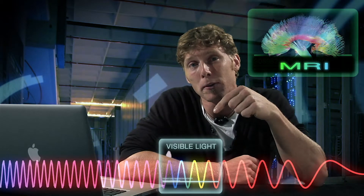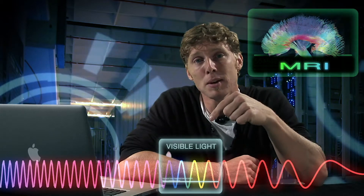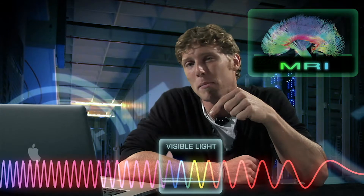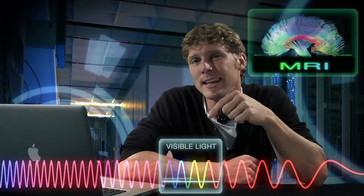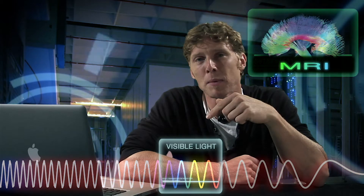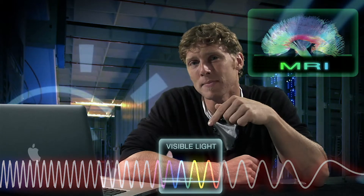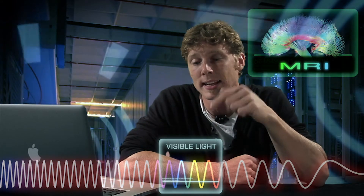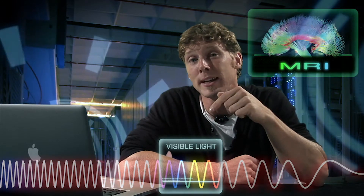This short colored section here in the middle represents the visible light that we can actually see. But to give you an idea of what life would be like without the parts of the spectrum that we can't see, let's turn off all the parts of the spectrum except the visible light.